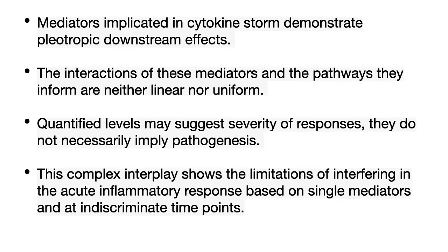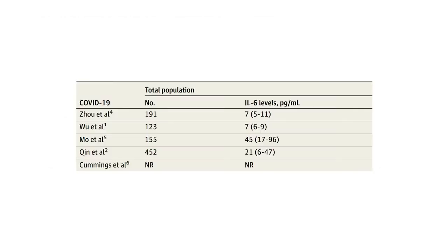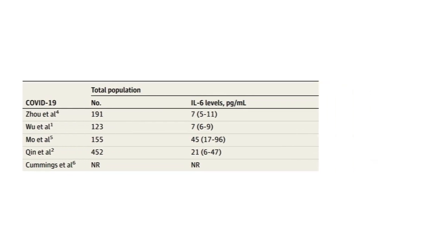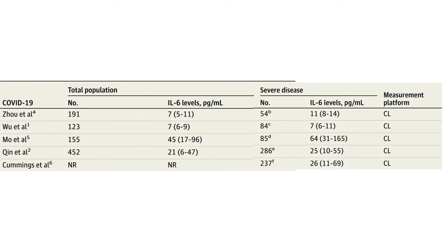Now let's see what markers we have seen in COVID-19. The marker most commonly checked is the interleukin-6 level, and based on this we have been using tocilizumab as a method of treatment for COVID-19. This is a table showing all these studies which have reported the interleukin-6 levels. The level ranges from 7 to 45 picograms per ml. These same levels, when checked in severe patients of COVID-19, obviously increase, and the method of testing is in the clinical lab.